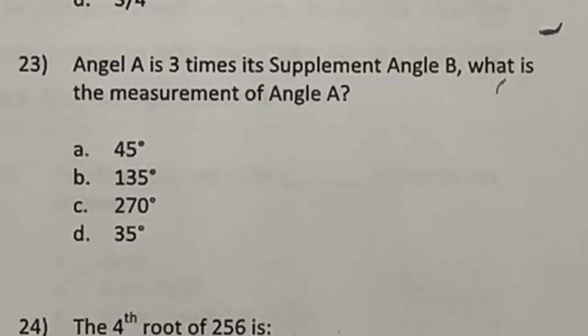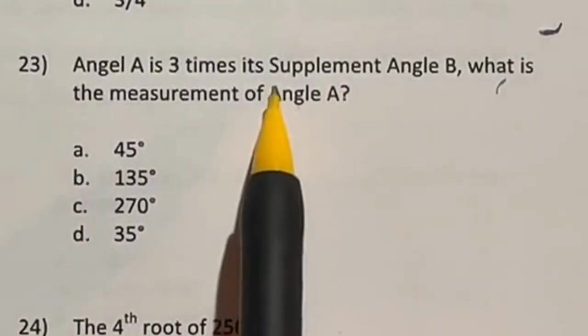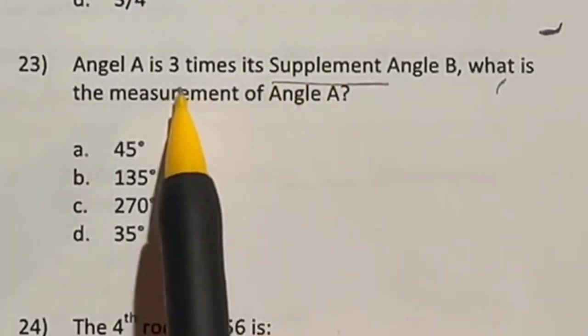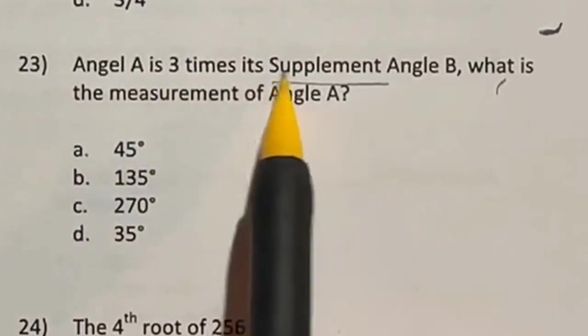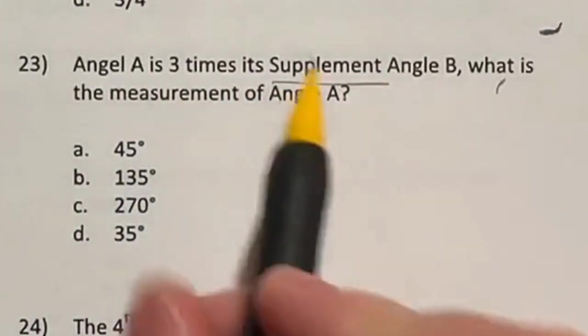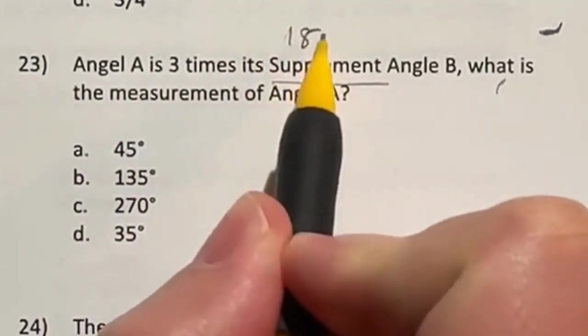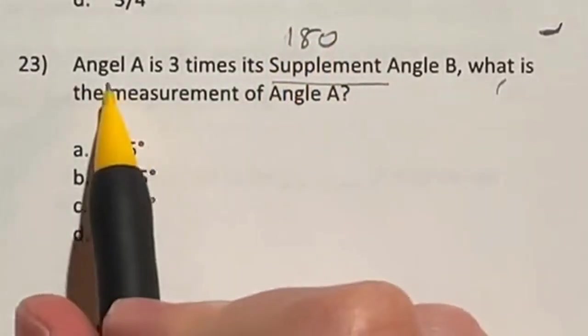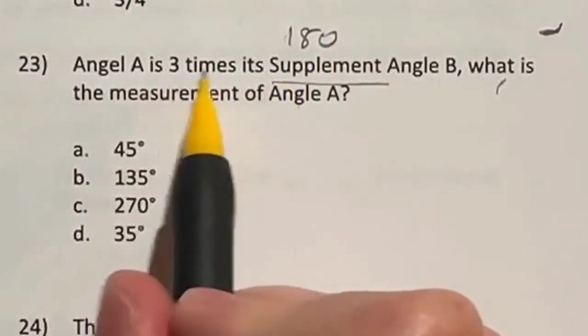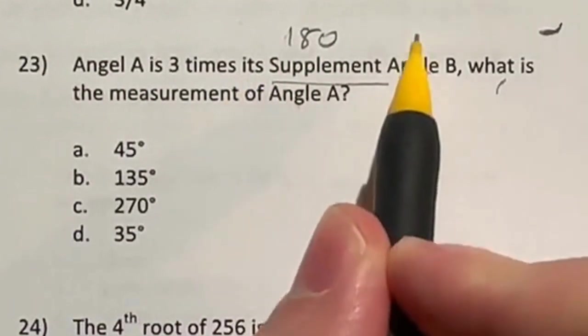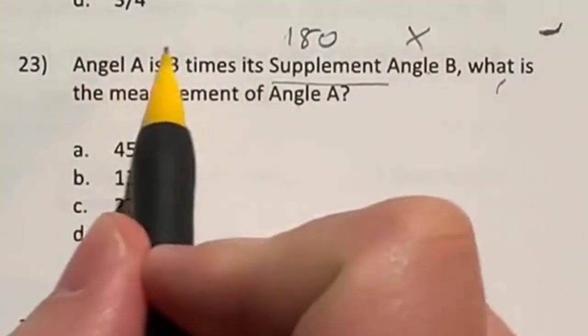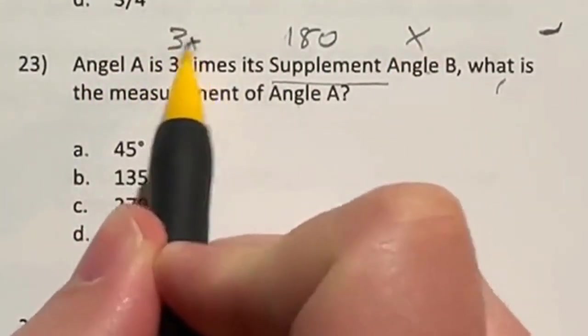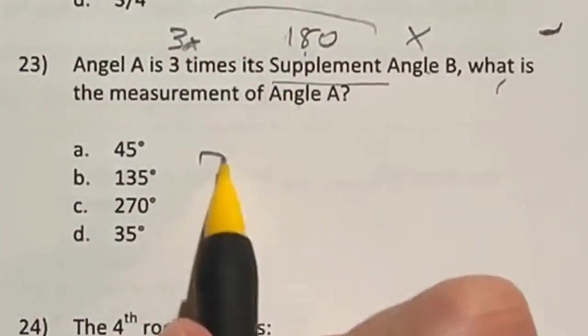So for number 23, we need two things here. The definition of supplement and we need to know some algebra work here. So it says angle A is three times its supplement angle B. Now supplement means that the two of them together add to 180. Now, if I have angle B and angle A is three times that, I'm going to label angle B as X. And if A is three times that, I'm going to call that 3X.